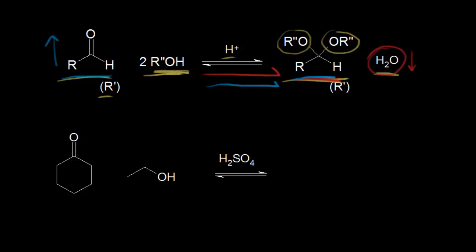This is done in an acidic environment, and there are a couple different proton sources you can use. You could use something like sulfuric acid, H2SO4, or you could use something like toluene sulfonic acid, TsOH — two of the more common catalysts used to form your acetal. Let's look at a reaction and then do the mechanism for it. It's a bit of a long mechanism, but I think it's a little bit easier to understand if you do it for an actual reaction. We have cyclohexanone reacting with an excess of ethanol using sulfuric acid as our catalyst.